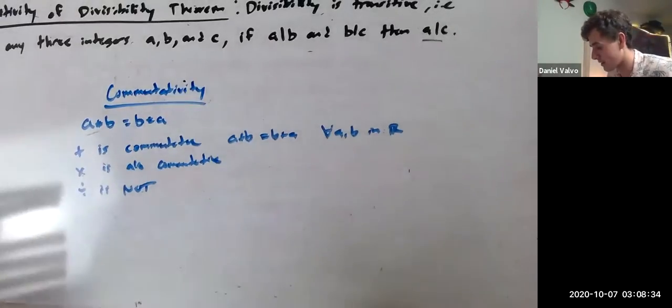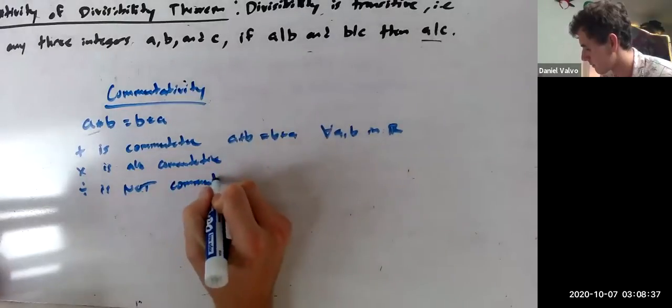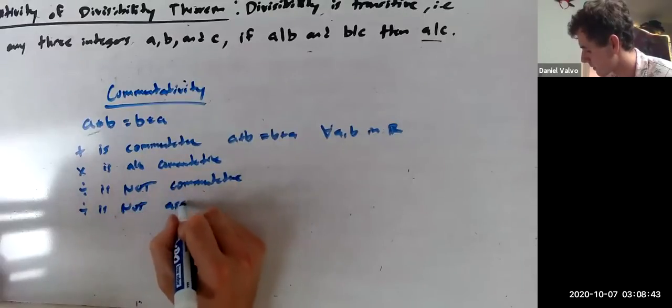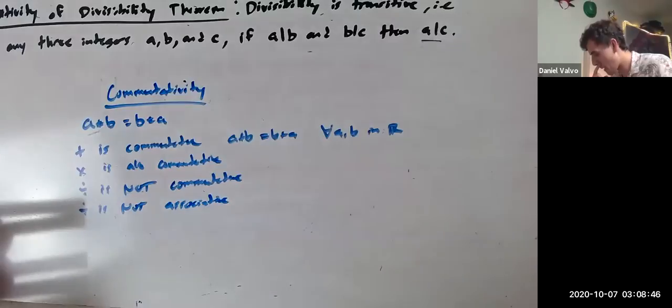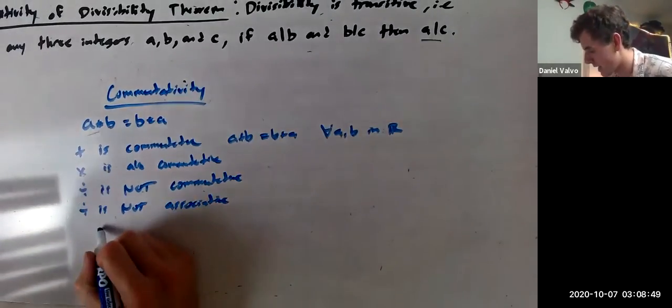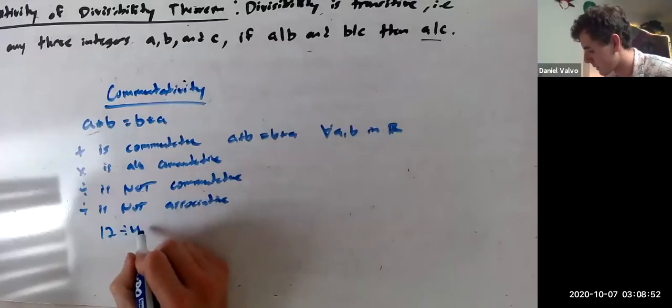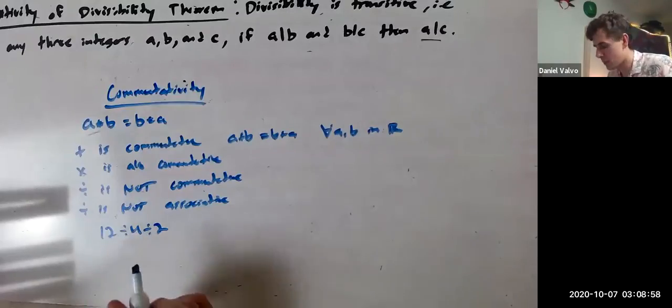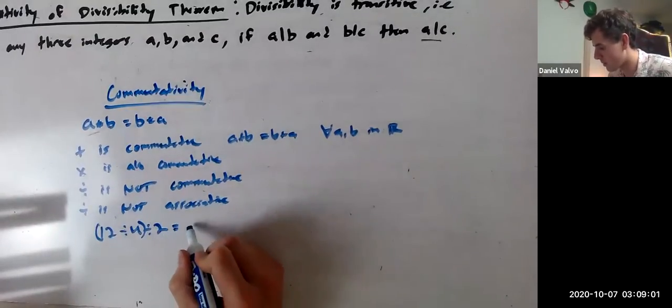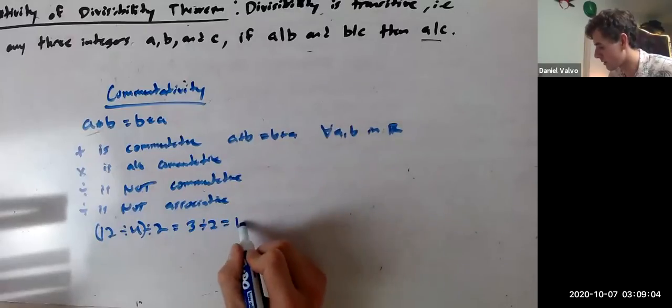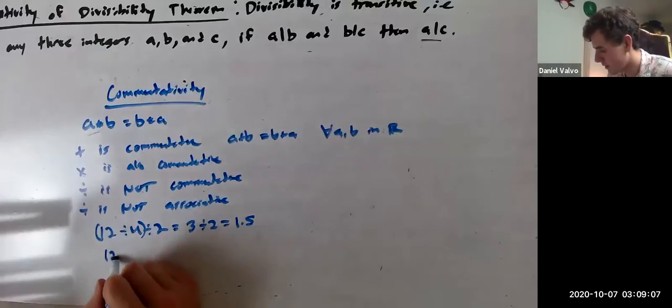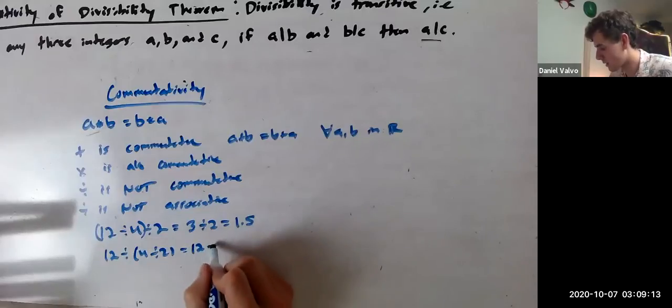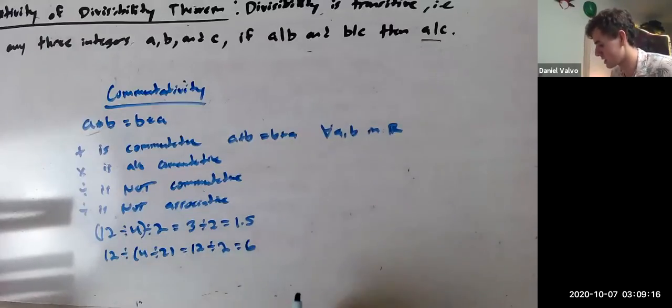But division is also not associative. And so what I mean by that is that's what that example was showing before. 12 divided by 4 divided by 2, the order you do these in very much matters. Because 12 divided by 4 and then divided by 2, that equals 3 divided by 2, which is 1.5. But 12 divided by 4 divided by 2, that is 12 divided by 2, which equals 6.